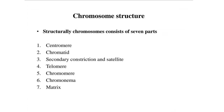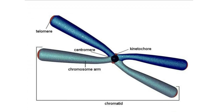Chromosome structure: structurally, chromosomes consist of 7 parts — centromere, chromatid, secondary constriction, satellite, telomere, chromomere, and chromonema and matrix.